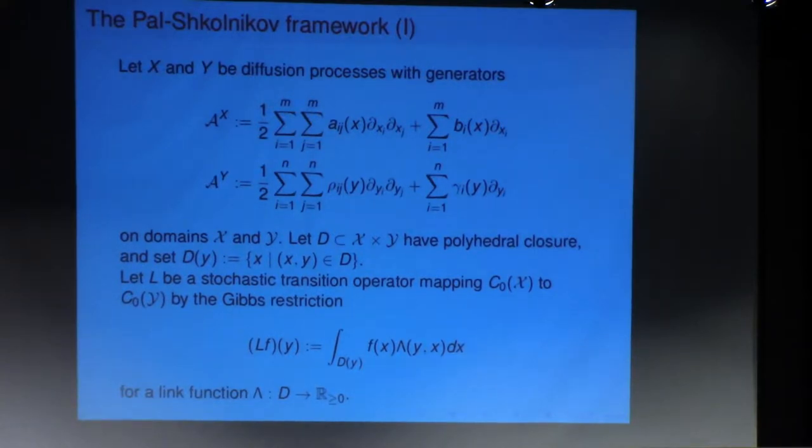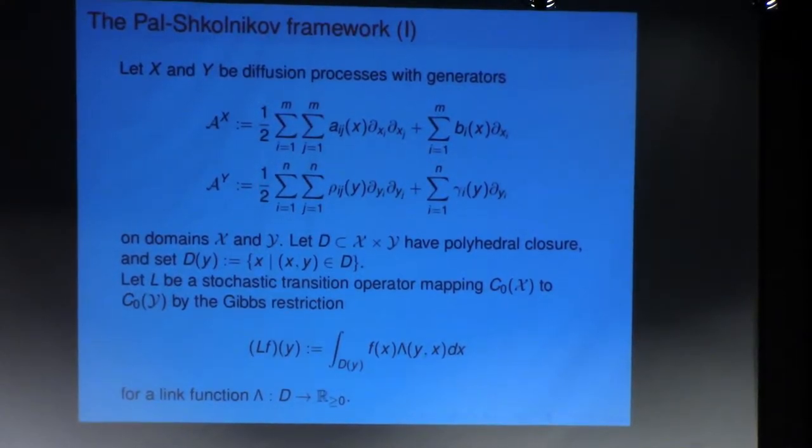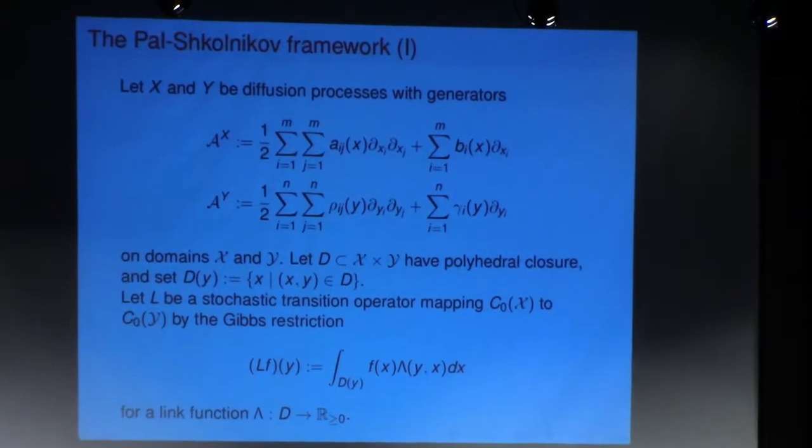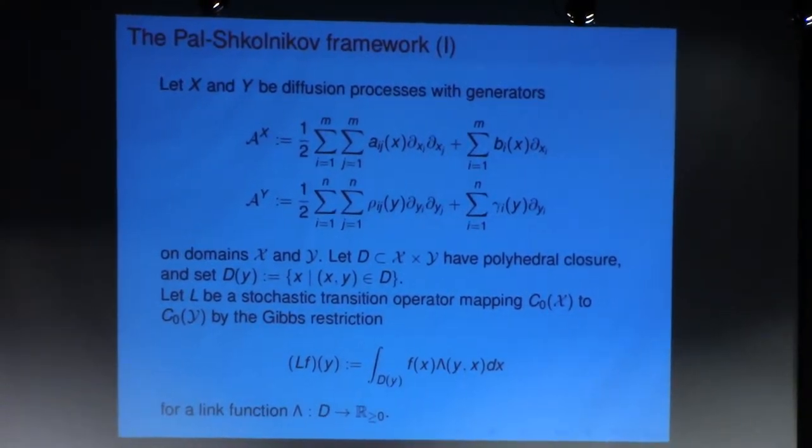The idea is that you abstractly start with two diffusion processes, X and Y. And what you ask for is conditions under which a third process, Z, will couple both of them.